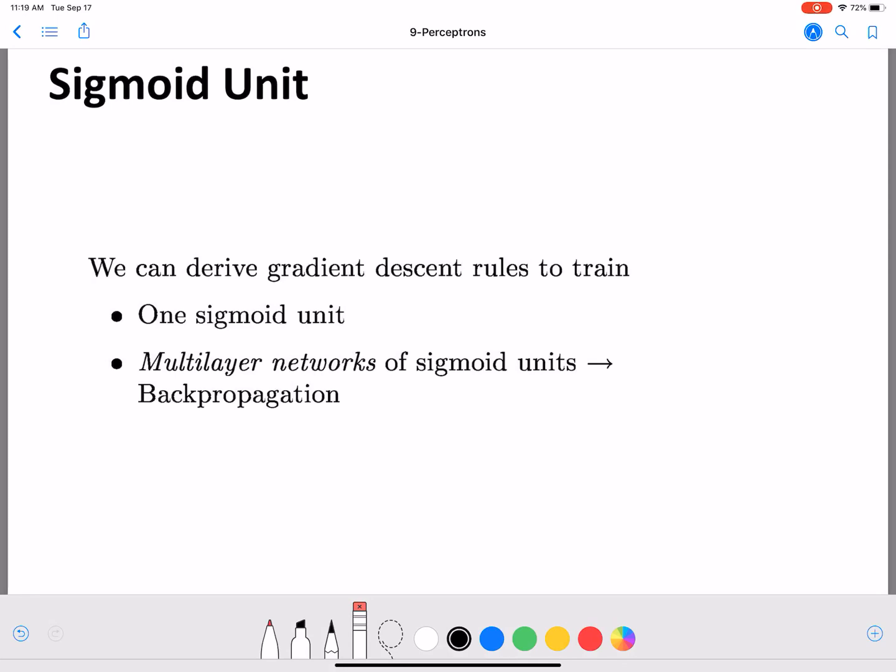In the last video, we looked at the sigmoid unit and derived the error gradient for the sigmoid unit. We also said that once we have the procedure to compute the error gradient, this can be repeated for other units as well, such as a tanh unit. We have a similar error function, we replace the output with our new function and then compute the error gradient. So once we have the error gradient, then what do we do?